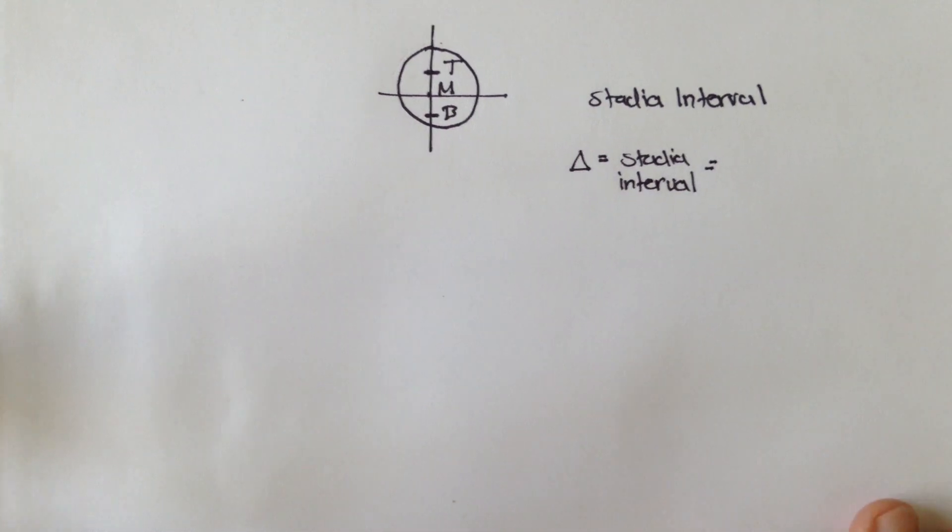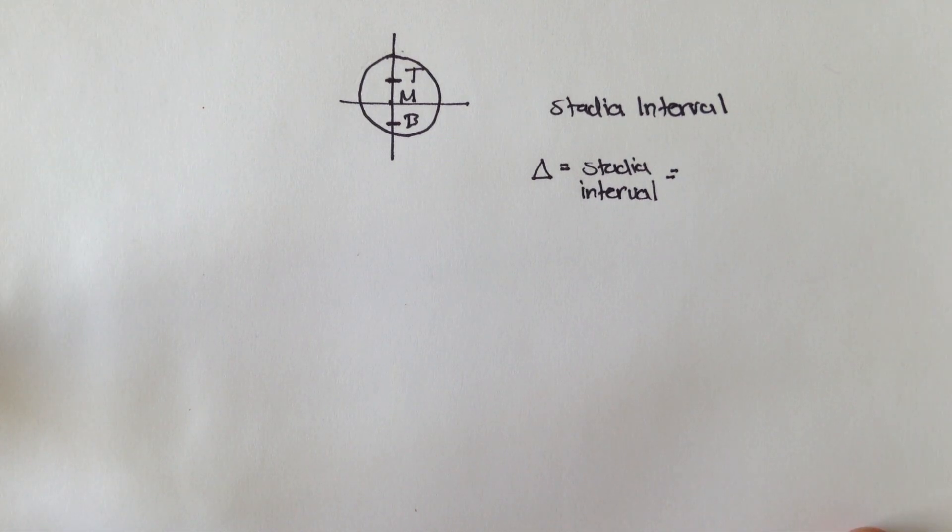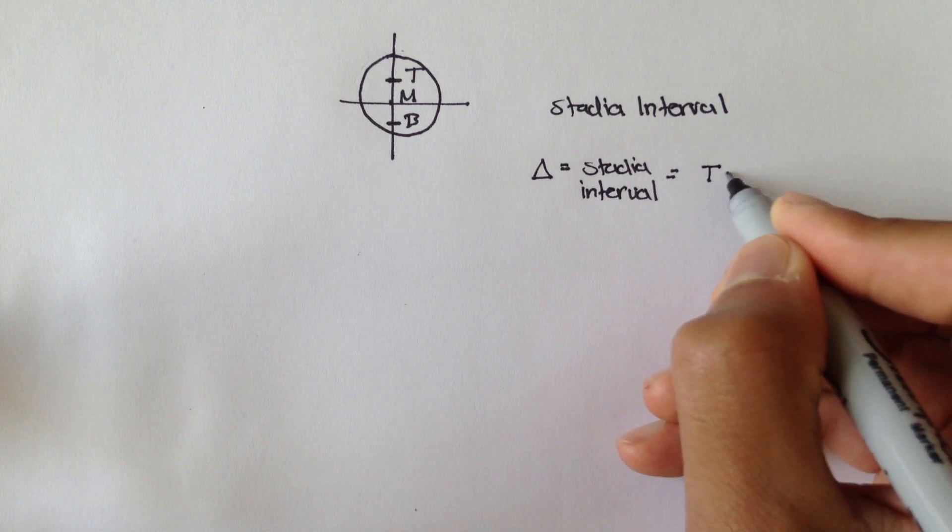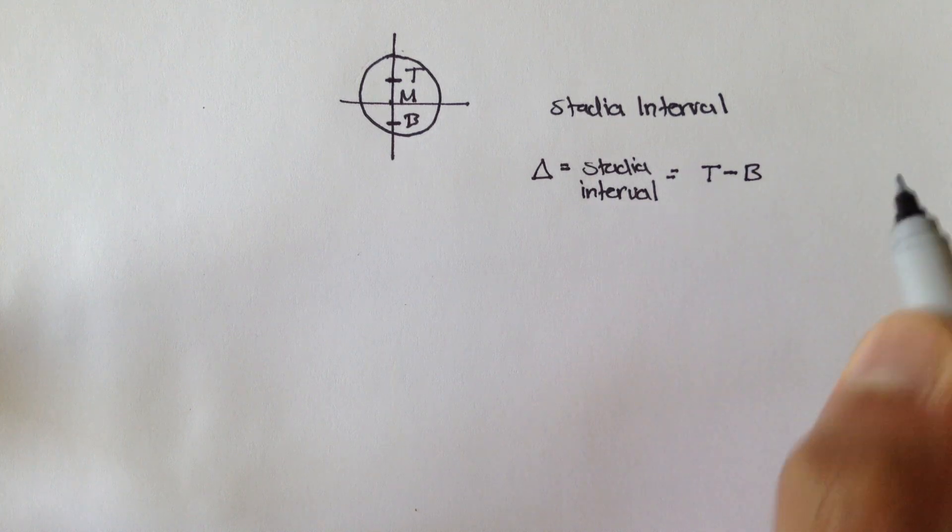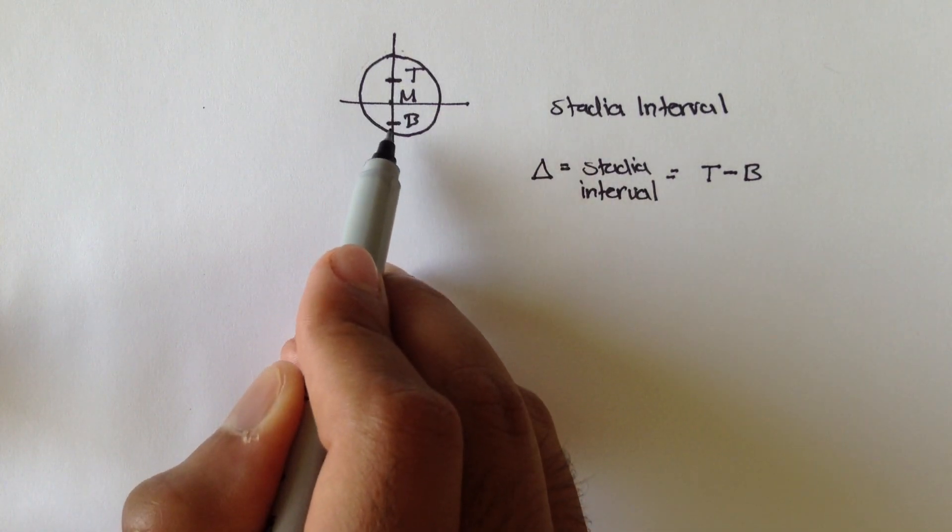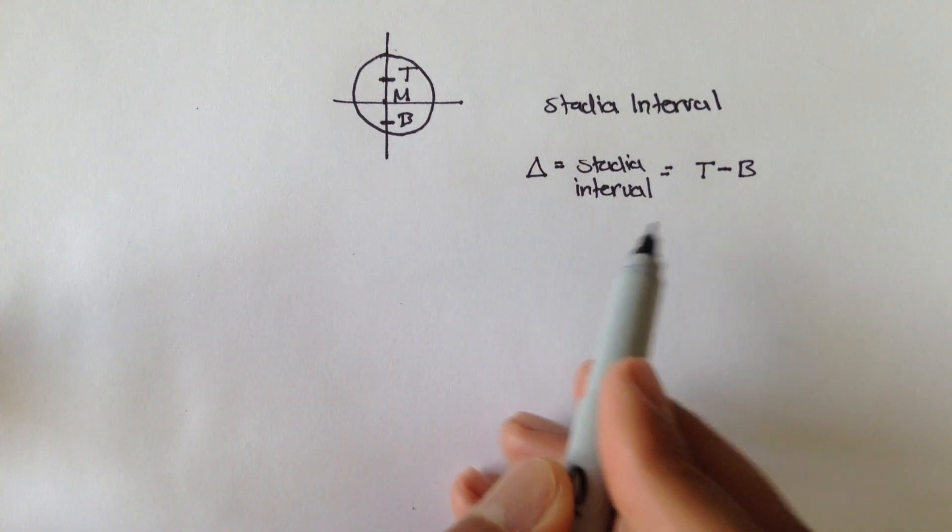And all the stadia interval is, is the difference in measurement of the top minus the bottom. So whatever measurement you read from the top mark minus your bottom is delta. It's called the stadia interval.